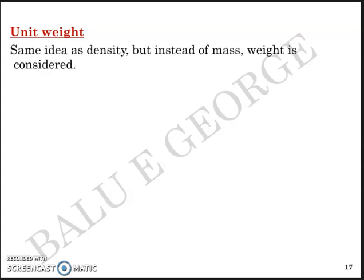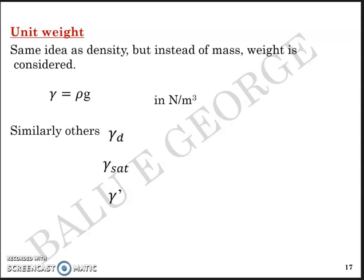Likewise, we have four unit weight terms. Unit weight is the same idea as density but instead of mass, weight is used. Unit weight gamma equals rho times g, represented in newton per meter cube. So we have gamma d, gamma sat, and gamma dash, which stand for dry unit weight, saturated unit weight, and submerged unit weight.